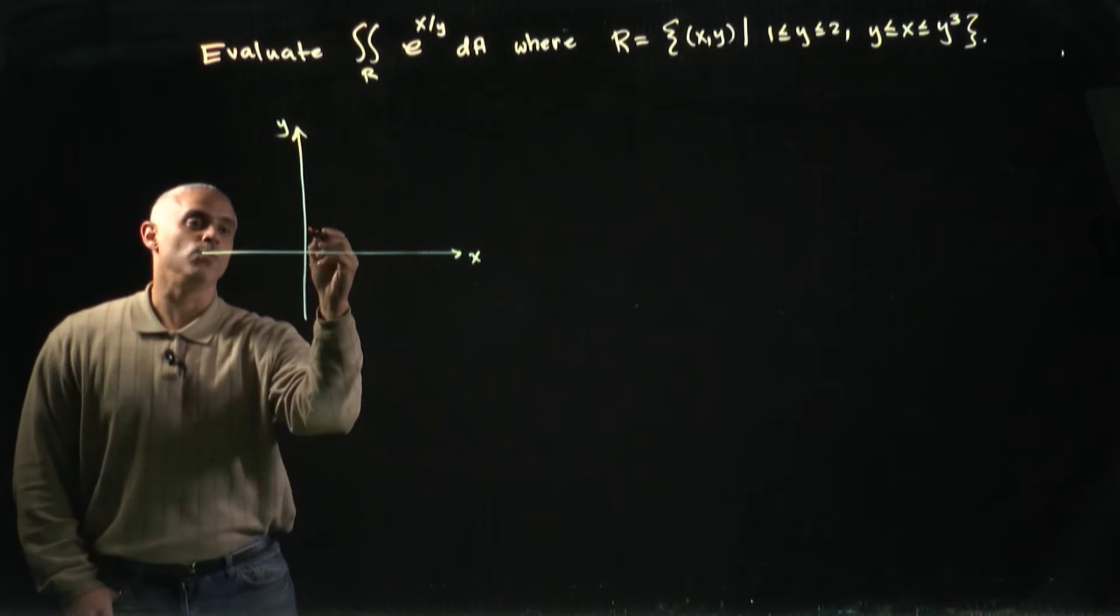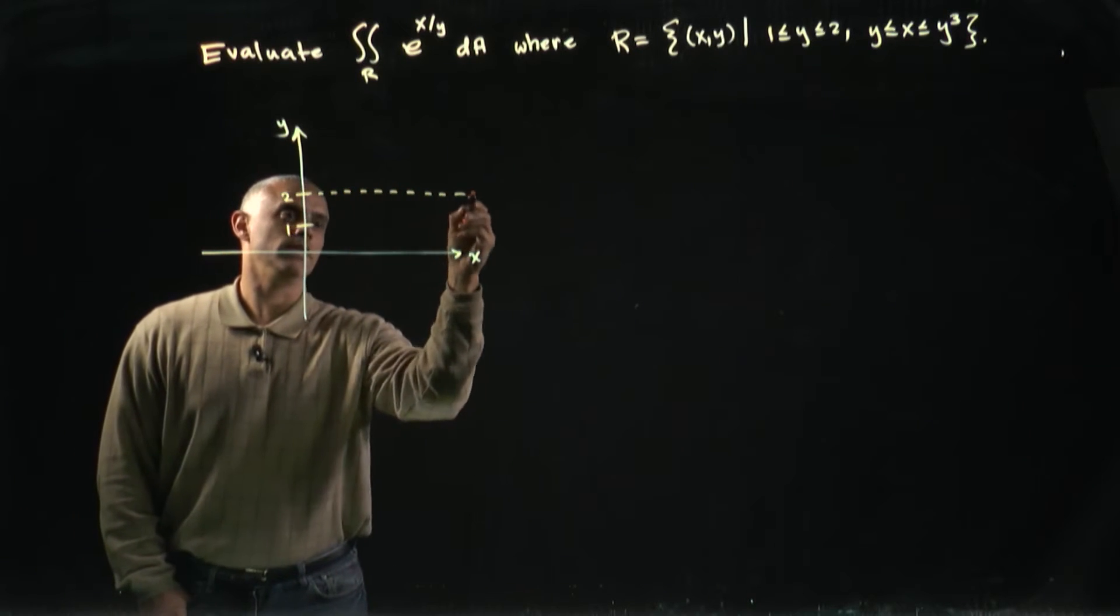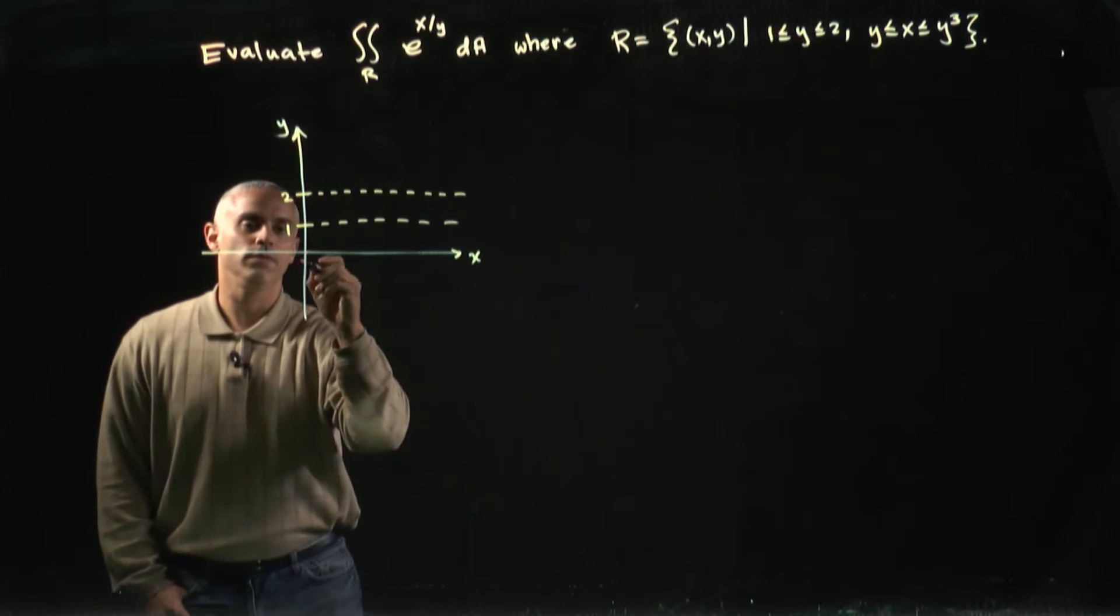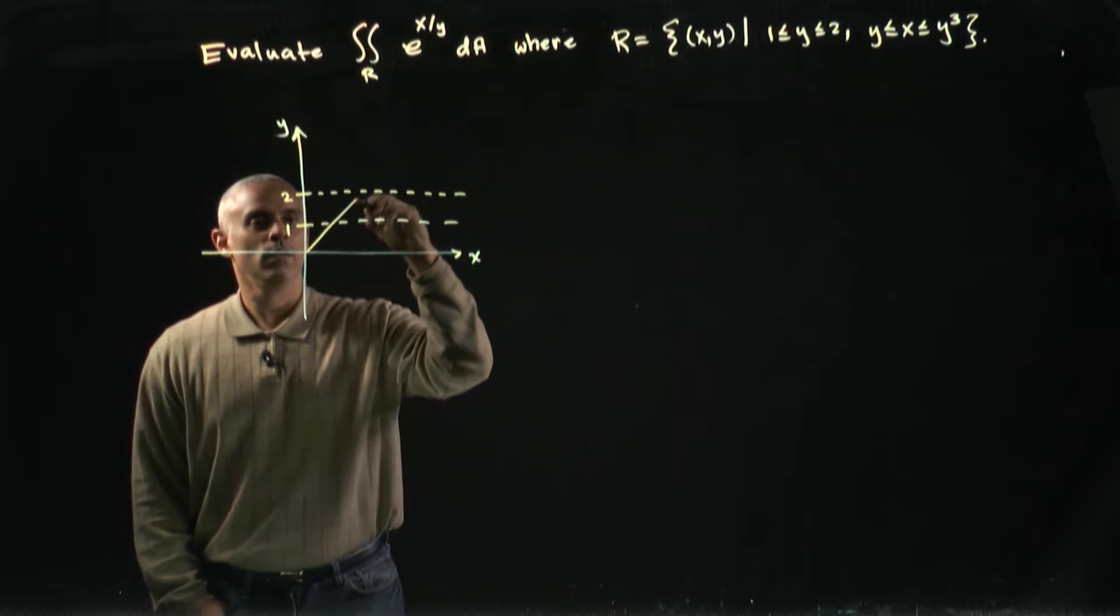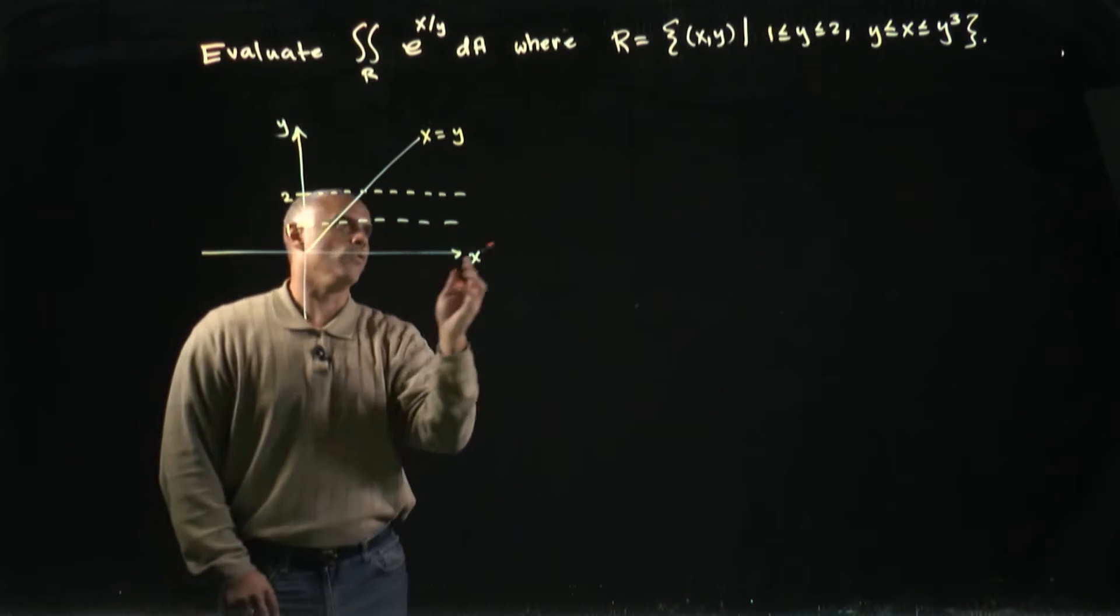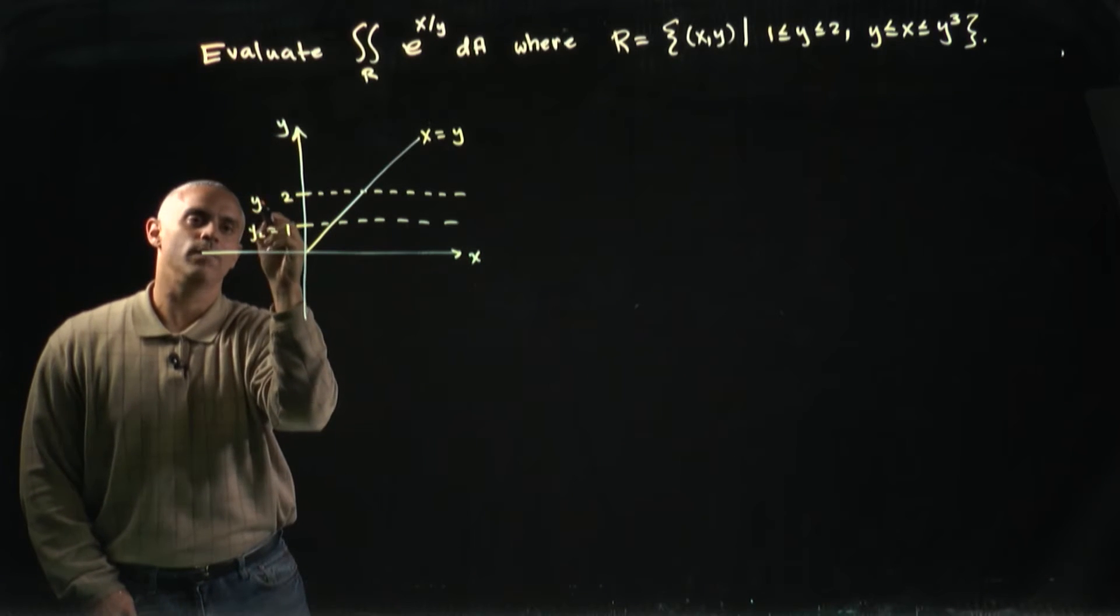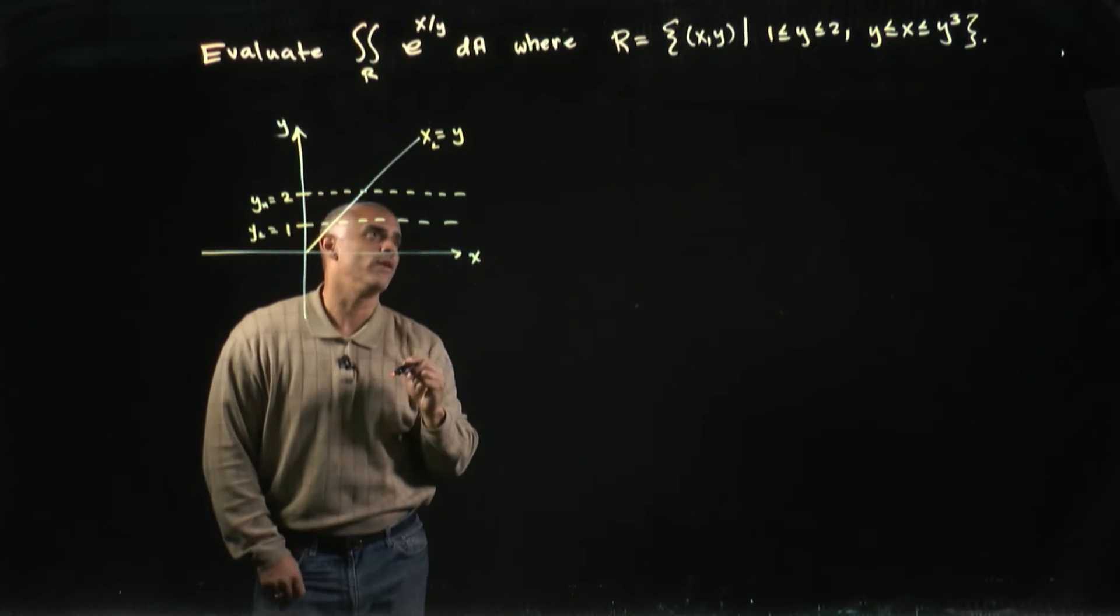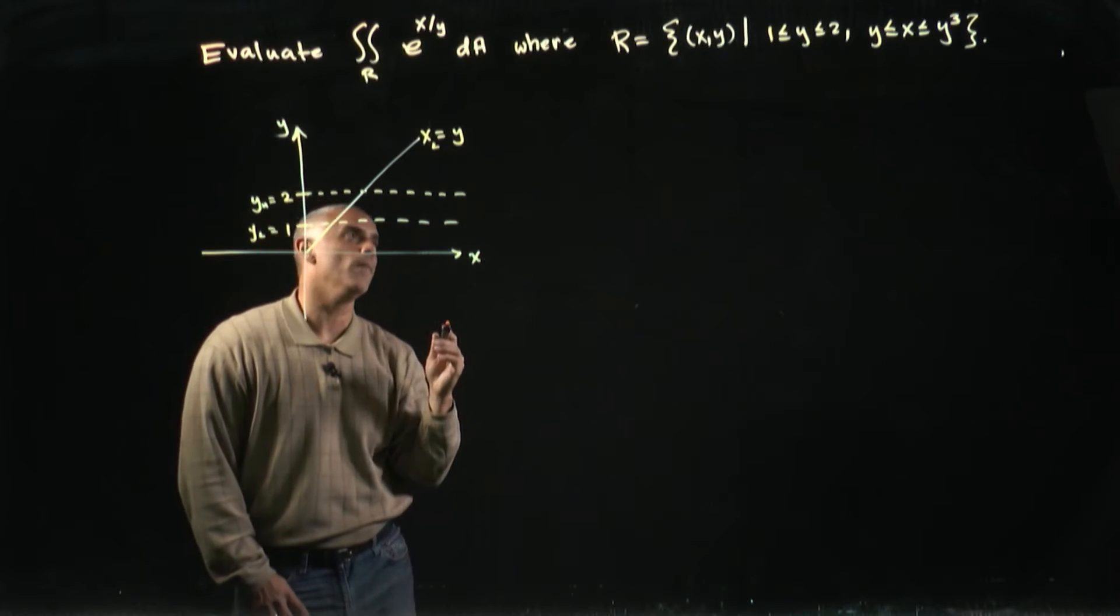So, y is bound between 1 and 2, which I'll draw as these dashed lines. And then x is bound between y and y cubed, so the line x equals y is the same as the line y equals x, and it kind of looks like this. This guy is my lower bounding function on y, this is my upper bounding function on y, this is my lower bounding function on x, and then my upper bounding function is x equal to y cubed.